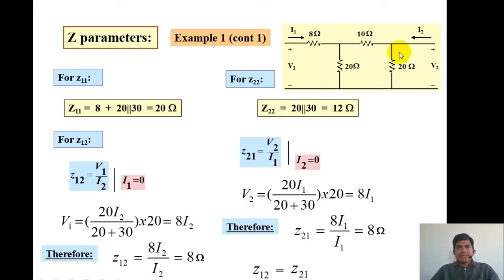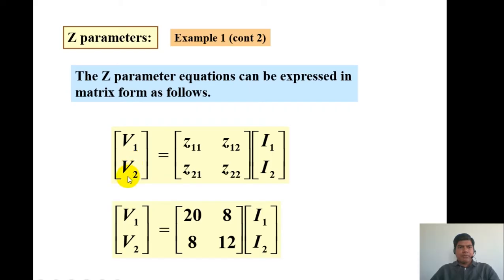Since Z12 equals Z21, this network is reciprocal. Since Z11 and Z22 are different, it is not a symmetrical network. The Z-parameters can be written in matrix form as [V1, V2] = [Z] × [I1, I2], where the impedance matrix Z has Z11 = 20, Z12 = 8, Z21 = 8, and Z22 = 12 ohms.